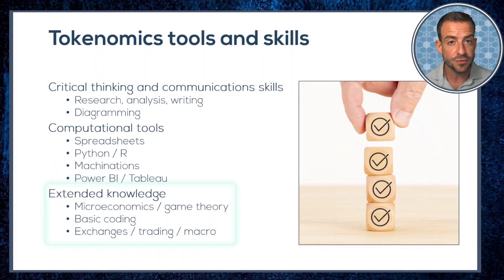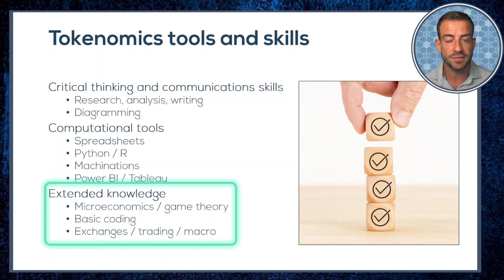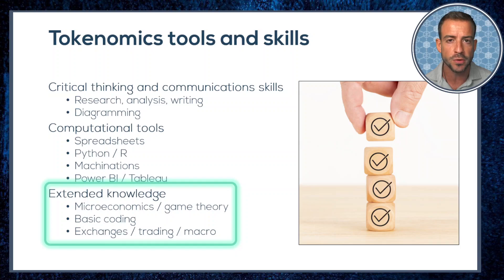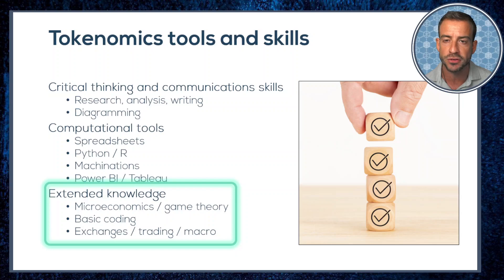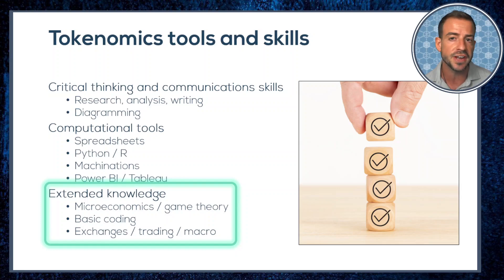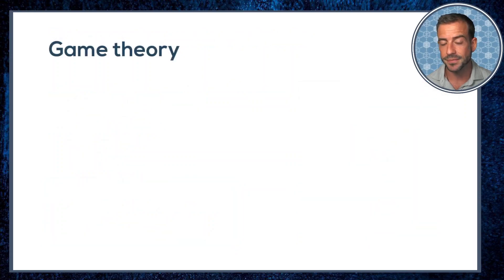We've reached the final section of this series, where we look at skills and knowledge that I wouldn't call essential for every tokenomics expert to have, but are certainly handy accessories that will often enhance your ability to understand the problems at hand and how to tackle them thoroughly. This is not an exhaustive list — it just highlights a few areas that have caught my attention. So let's kick off by discussing game theory.